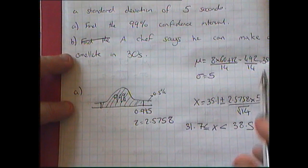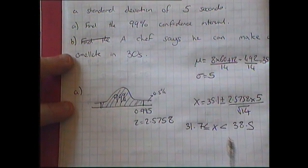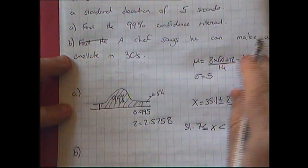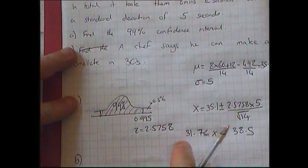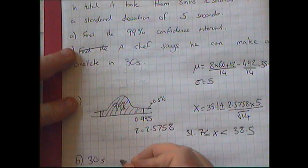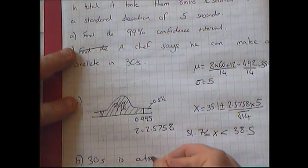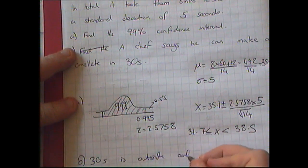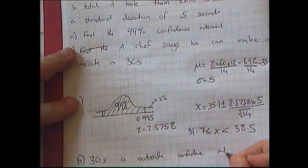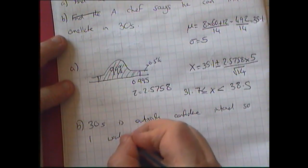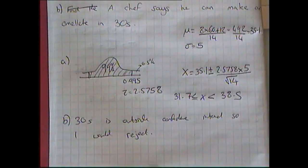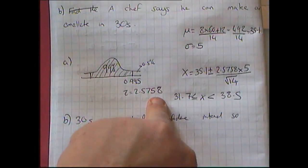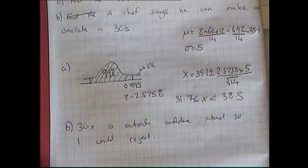Part B asks: a chef says he can make an omelette in 30 seconds — would you believe him? 30 seconds is outside my confidence interval, so I would reject that. There's only half a percent chance of being below that value, which is very small, so that's really quite unlikely.